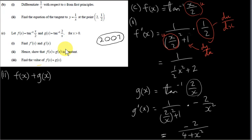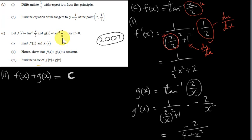In part 2, we want to show that f of x plus g of x is constant — meaning it equals some fixed number c that never changes regardless of x. For example, if we plug in x equals 5, we'd get inverse tan of 5 over 2 plus inverse tan of 2 over 5, and that sum should equal the same constant as for any other value of x. However, plugging in specific values isn't a proof — we can't verify it for all values of x that way.